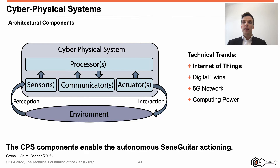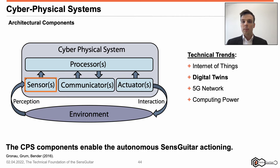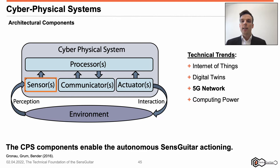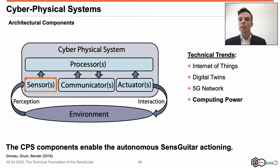Faced with the recent technical trends, the cyber-physical system design is particularly attractive. The Internet of Things provides a technical environment that supports the data and information exchange among IoT devices. The digital twins concept supports the creation of a digital representative of any form of device, including guitars as well as their sub-components and mechanics. The 5G networks support fast data and information exchange, so that latencies can be reduced — which is particularly essential at making music.